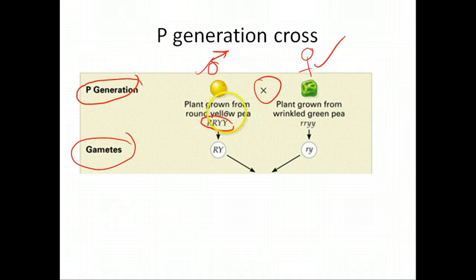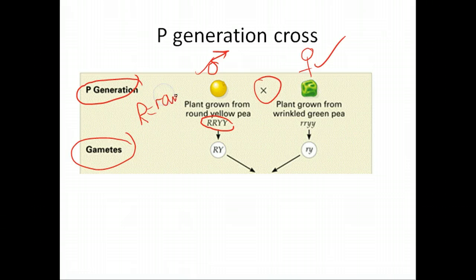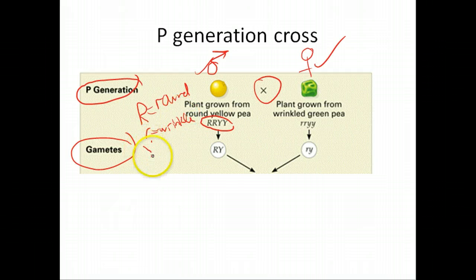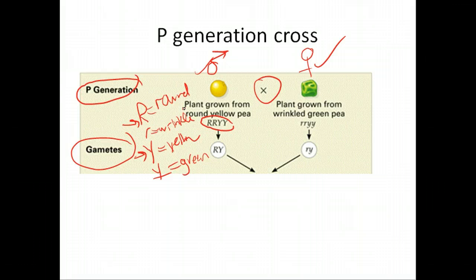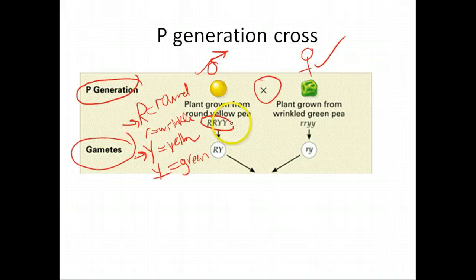Let's take this true breeding plant that always produces round and yellow peas. Big R equals round, little r equals wrinkled, big Y equals yellow, and little y equals green. Those are the rules: big R and big Y are dominant, so whenever you see one of those present in the genotype you're going to see that phenotype. So you take this true breeder and cross it to this other true breeder.